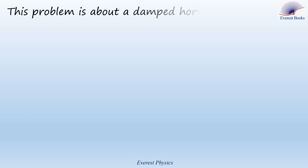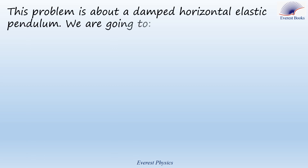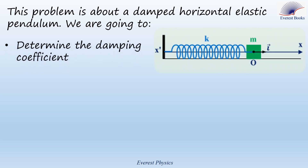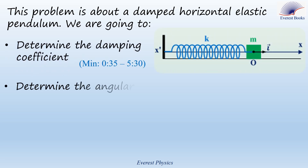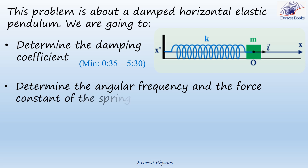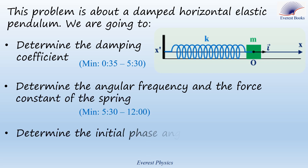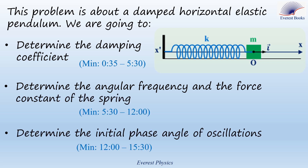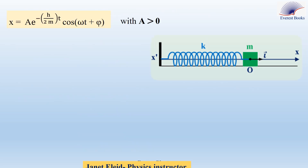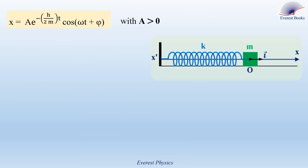This problem is about a damped horizontal elastic pendulum. In this video, we are going to determine the damping coefficient, determine the angular frequency and the force constant of the spring, and finally determine the initial phase angle of oscillations. The abscissa of the block of a horizontal elastic pendulum is given by x equals a·e to the power minus h over 2m times cosine(ωt + φ), with a positive.